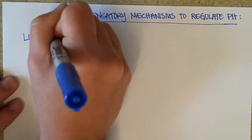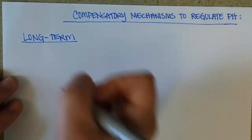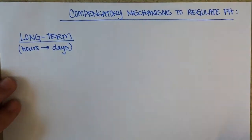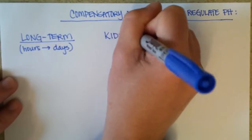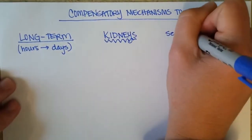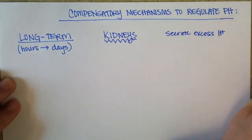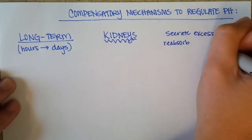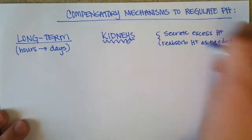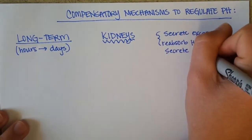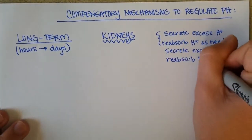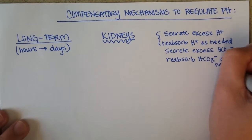Long-term regulation of blood pH works within hours to days and is primarily controlled by the kidneys. They can secrete and reabsorb hydrogen in and from the blood as needed. The kidneys can also secrete and reabsorb bicarbonate in and from the blood as needed.